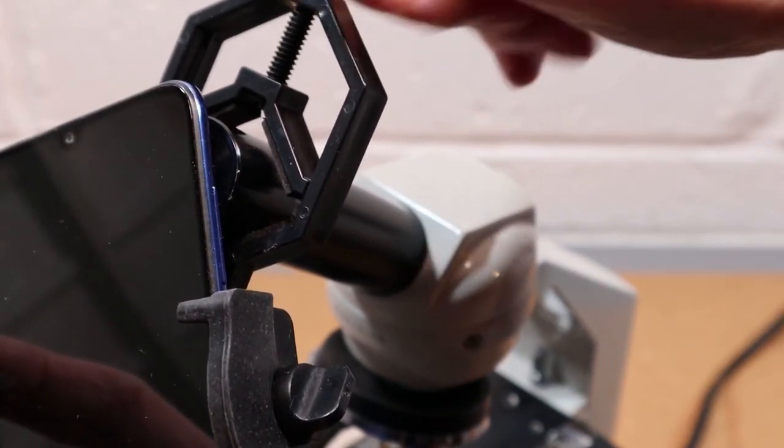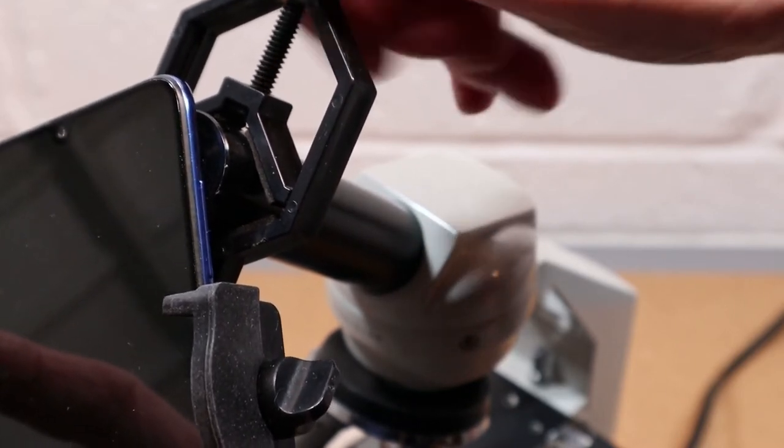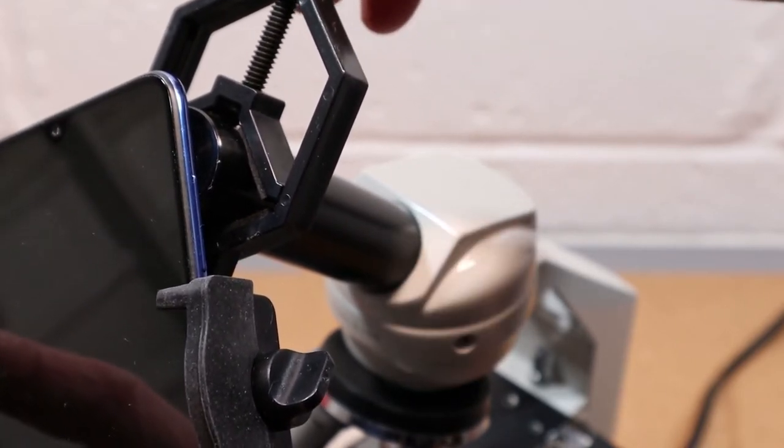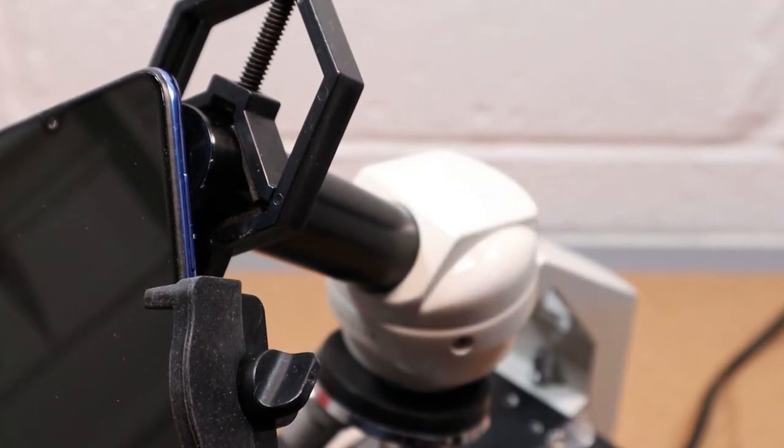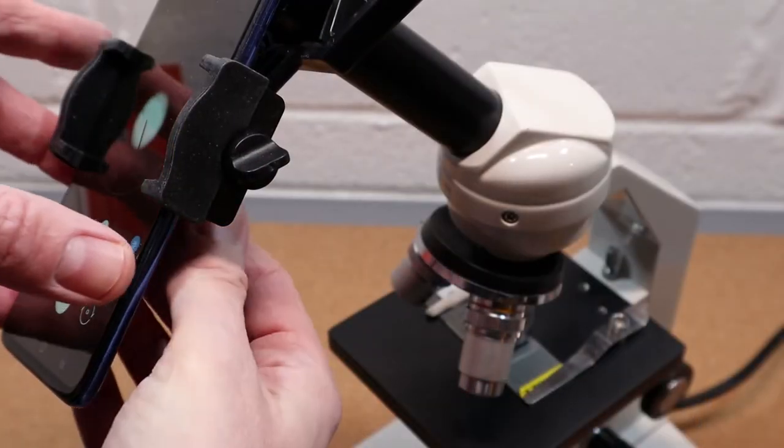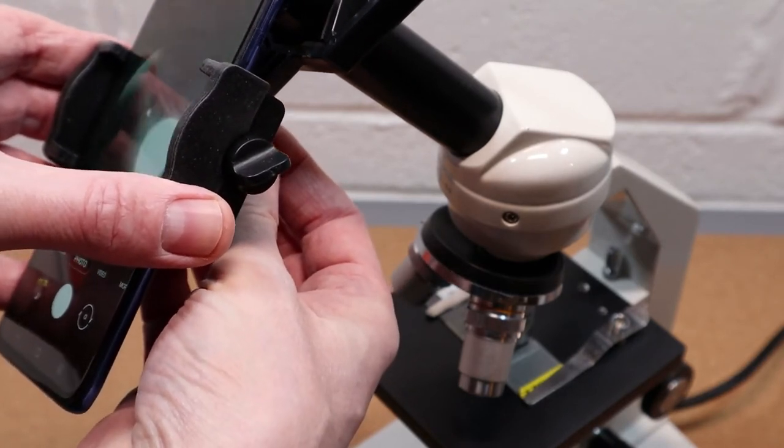One thing I was a little concerned with was that the eyepiece was made of metal and I didn't want to scratch the glass covering the lens in the phone. Maybe I could have placed a little foam ring over the microscope's eyepiece to avoid this. The final step is to slacken off that dial in the back of the adapter to perfectly align the phone's lens with the centre of the eyepiece.